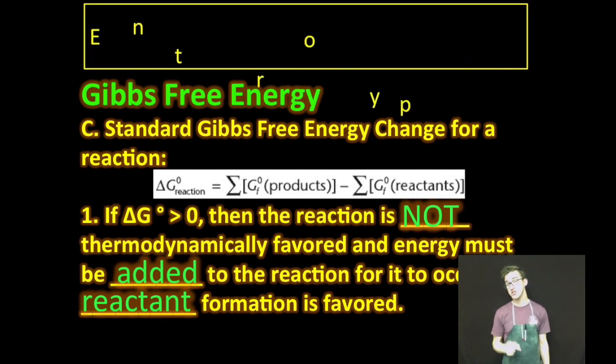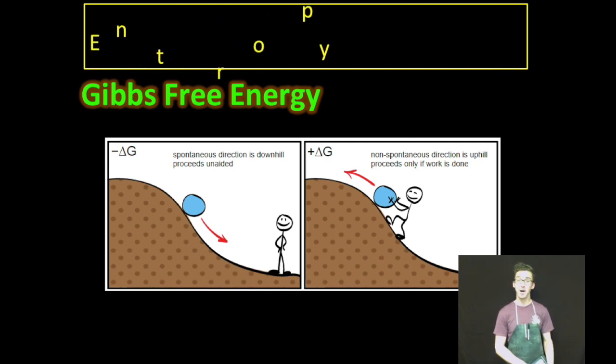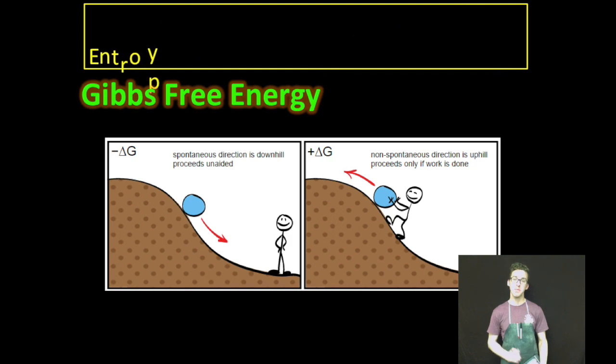Important to note that if Gibbs free energy change is greater than zero, the reaction is not thermodynamically favored and energy must be added in order for the reaction to occur. Reactant formation is favored. So again, positive delta G, non-spontaneous, not thermodynamically favored, energy has to be put in in order for that reaction to proceed.